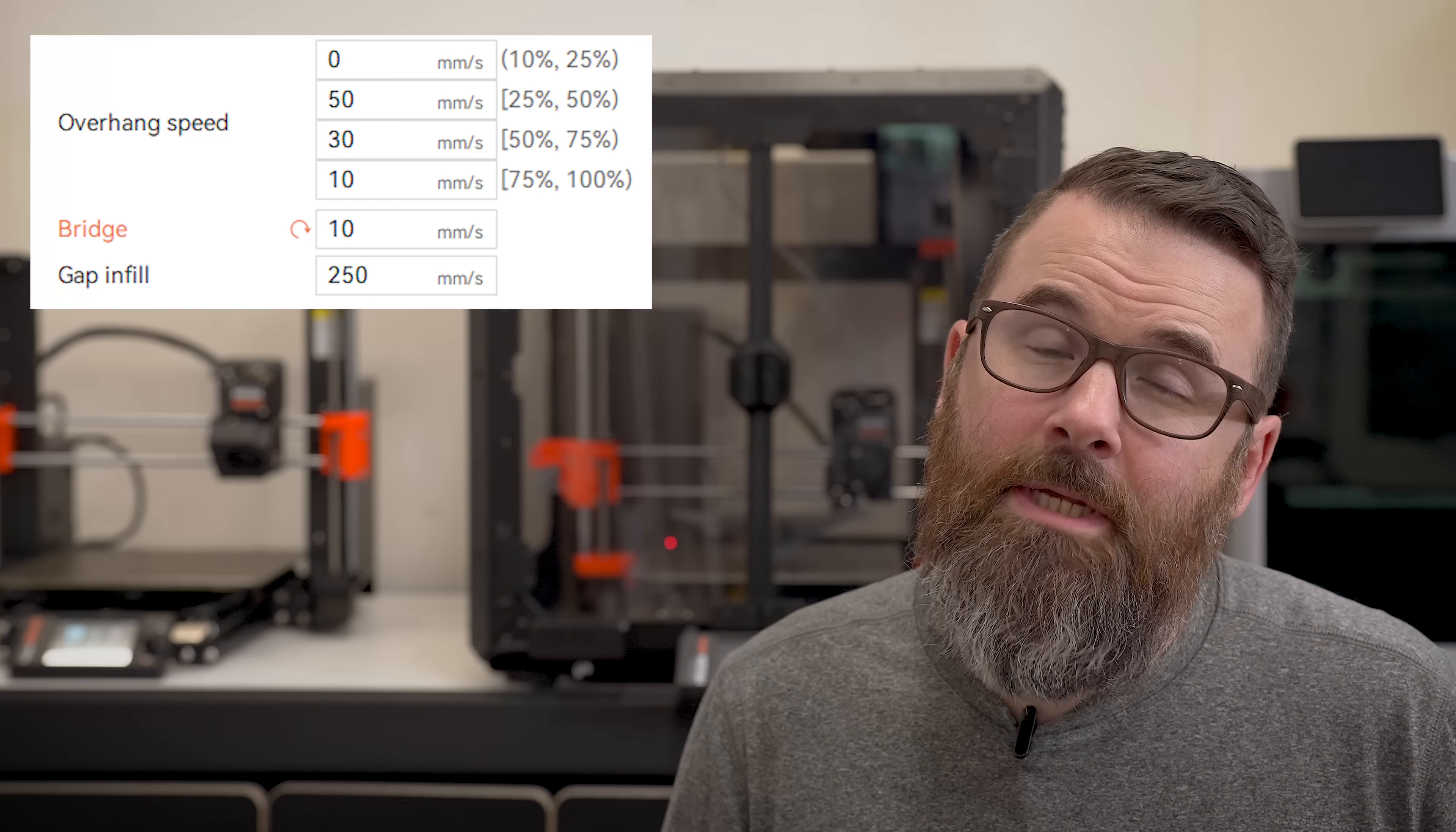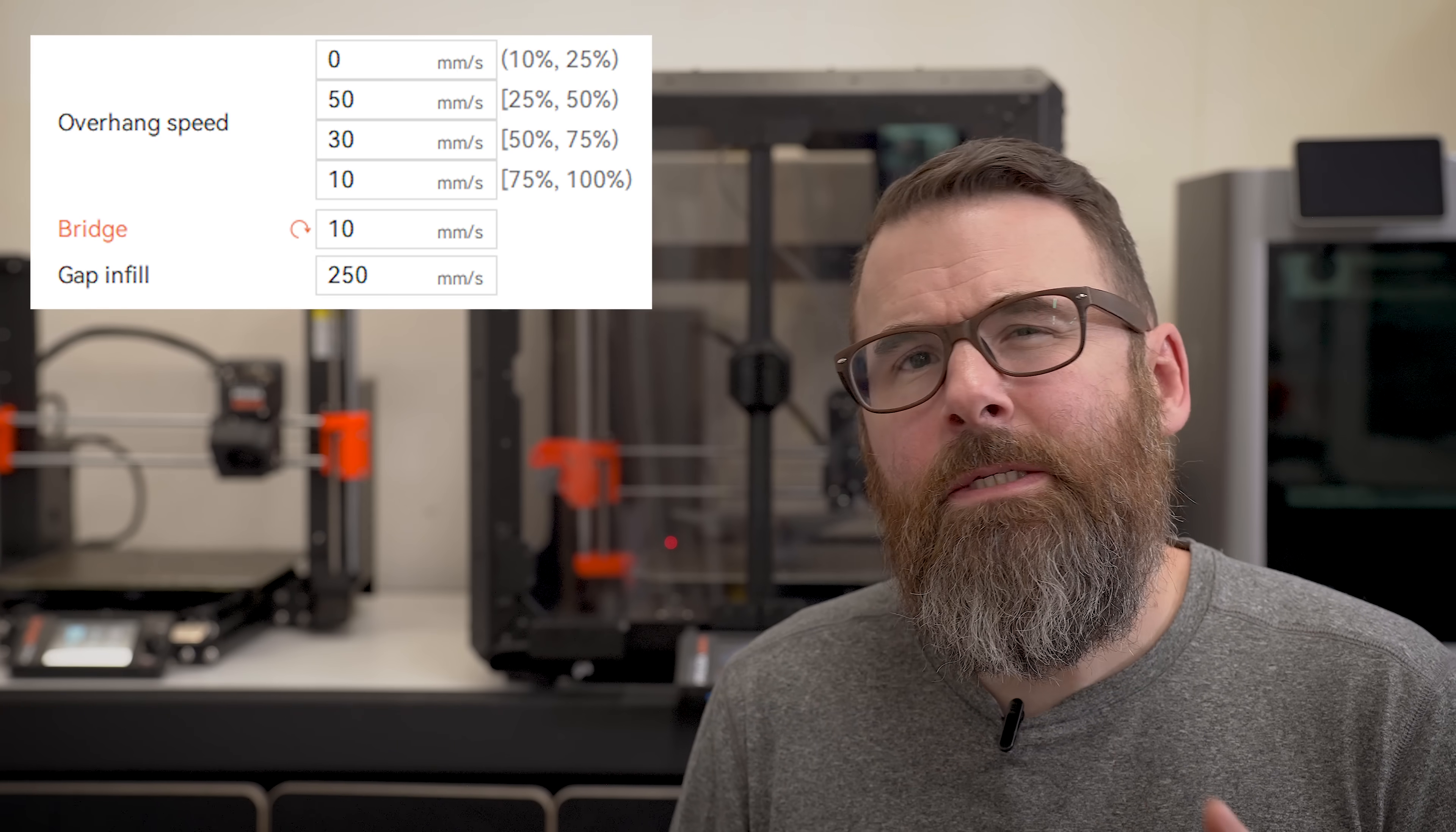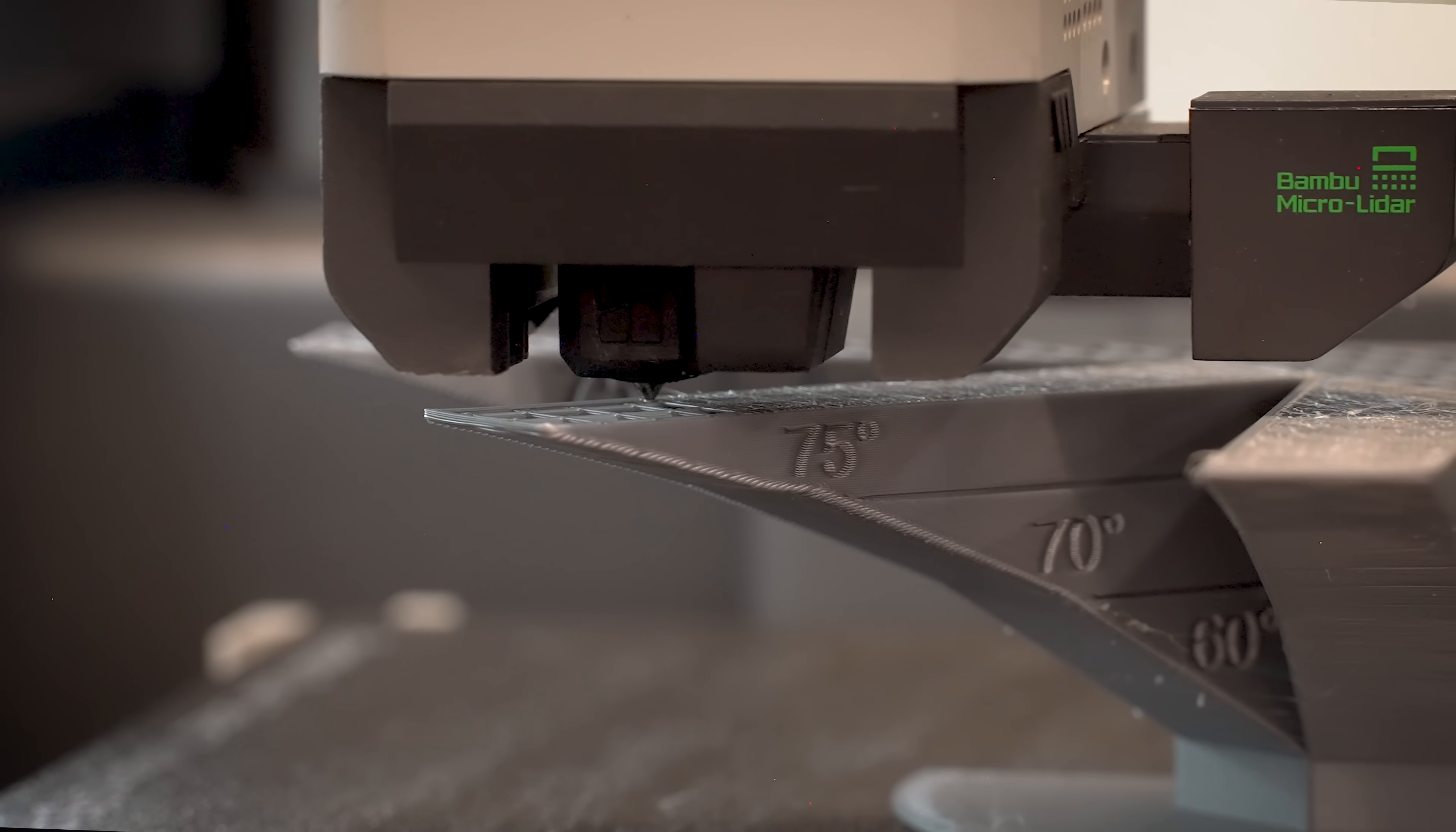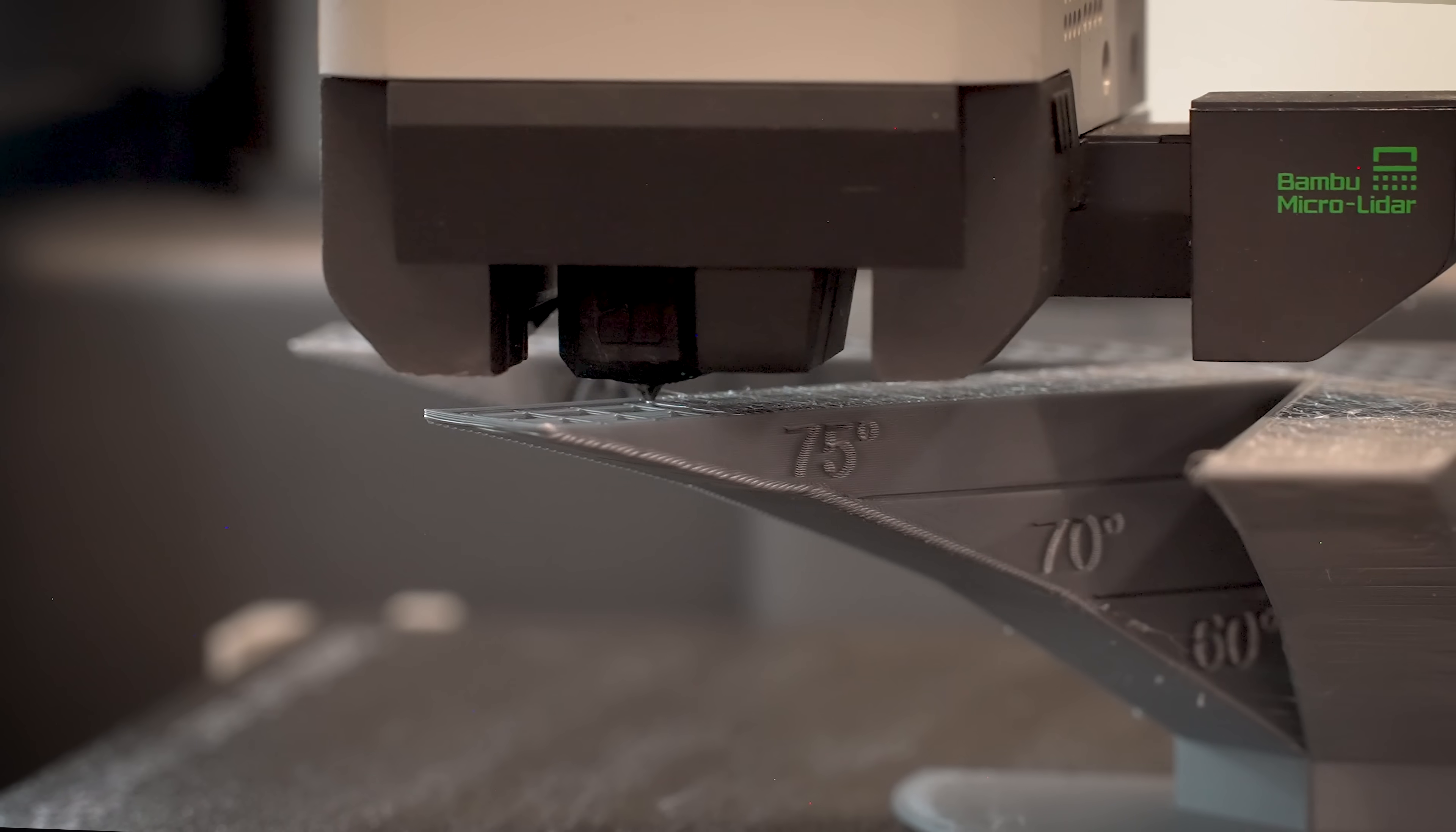So now that we've got all this figured out, we can do a proper overhang test between the Bamboo X1C and the Prusa Mark IVS. I'm also including the Mark IV in there as well. It should finish here in a few minutes. All I did in Bamboo Studio is reslice it with the bridge setting changed to 10 millimeters a second instead of 50 millimeters a second. This has an added side effect of making the print take longer because the layer after the infill is treated as bridges. So that layer took forever, but that's not really what we're comparing. We're just comparing overall overhang performance.